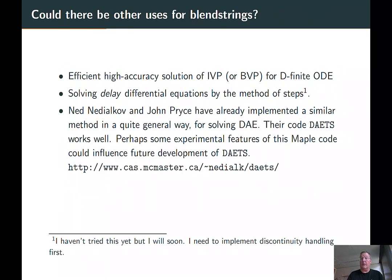Could there be other uses for blendstrings? They might be interesting for efficient high accuracy solution for initial value problems or boundary value problems, for what's called D-finite ODEs or also called Polynomic ODEs—differential equations for which Taylor series can be generated efficiently. Another use might be solving delay differential equations because we have this lovely quadrature formula. Ned Nedialkov and John Price have got code for solving differential algebraic equations using very similar methods, and maybe some of the experimental features of this Maple code could influence future developments.